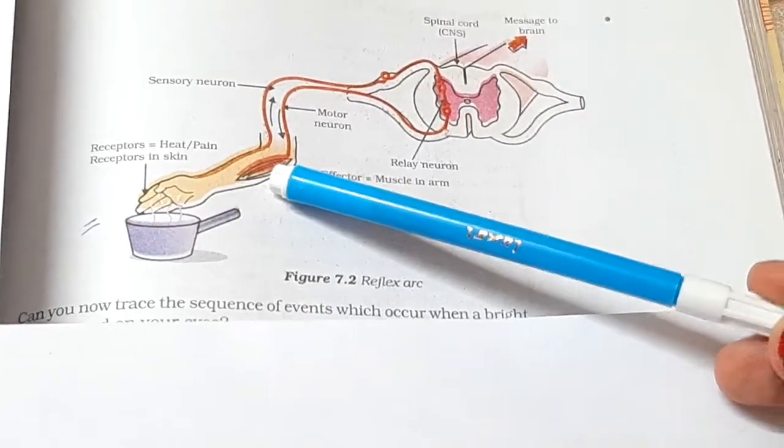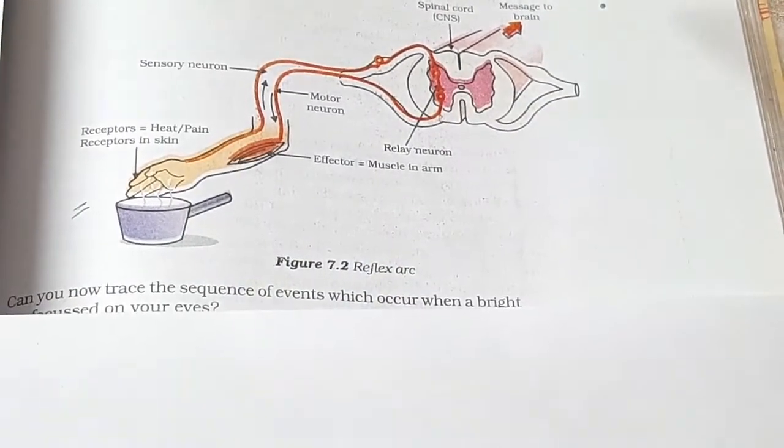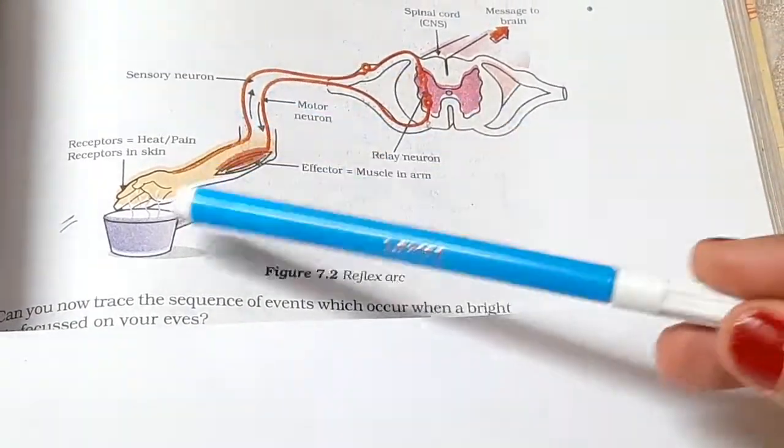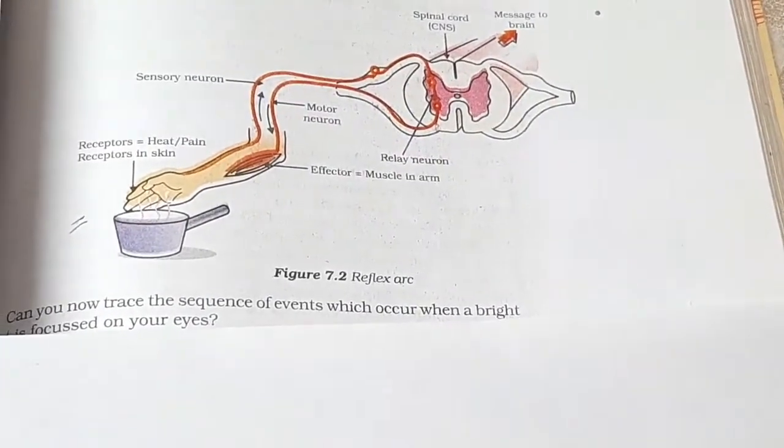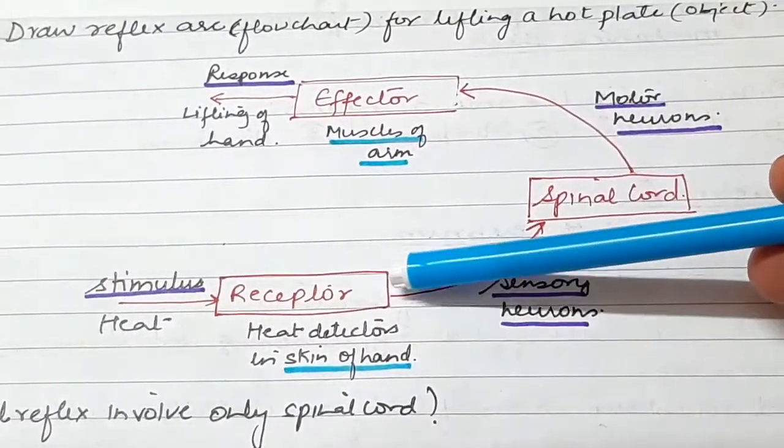The response is that immediately the hand will be removed. When we touch the hot object, we will remove the hand. So this is a reflex arc. Now we have seen the effectors and receptors in our previous video.